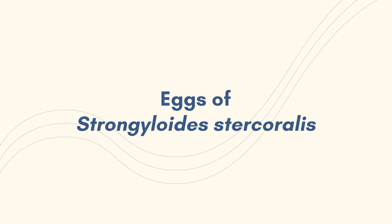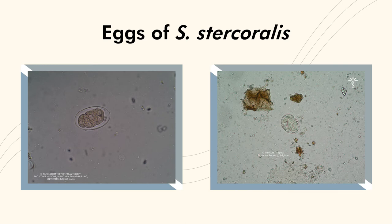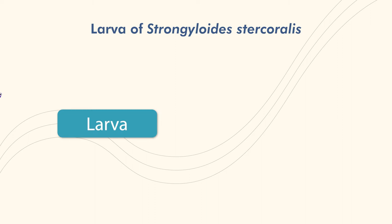The eggs of Strongyloides stercoralis are slightly smaller than hookworm eggs. Eggs measure 55 µm in length and 30 µm in breadth. The eggs are thin-shelled, hyaline, transparent, and oval. An egg contains a 2-, 4-, or 8-cell stage, or larvae ready to hatch.